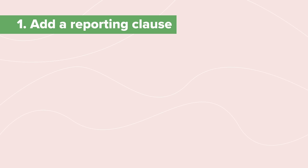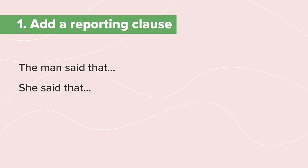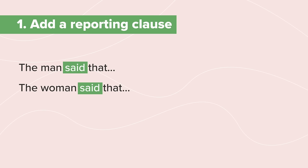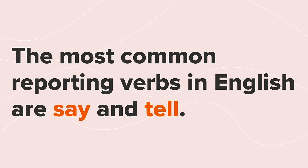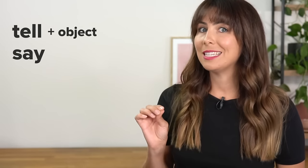For reported speech, first of all we need to start with a reporting verb or a reporting clause — "he said" or "the man said that", "she said" or "the woman said that." The most common reporting verbs in English are say and tell. Tell is a transitive verb so it always needs an object, whereas say doesn't need to have an object. I've got a really useful lesson that might help you remember these verbs — I'll link it up here and at the end if you want to review.